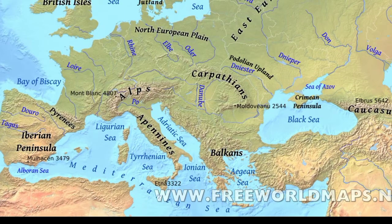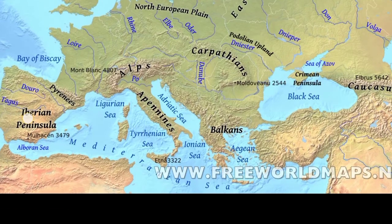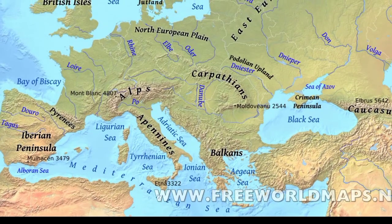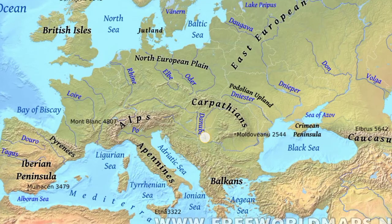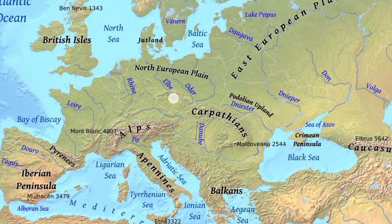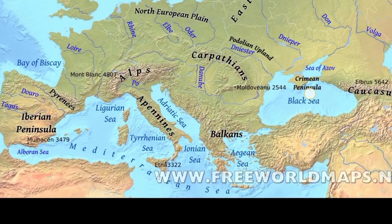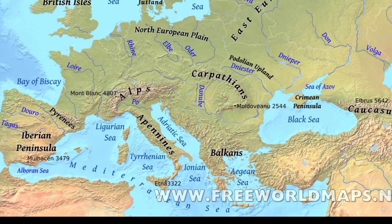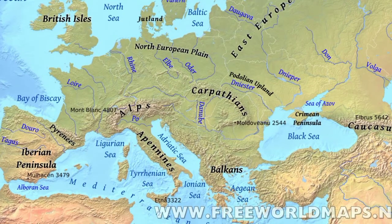This is the Pyrenees, the Iberian Peninsula, and the Bay of Biscay. This is the Danube River, the Elbe River. This is the Black Sea, and this is the Balkans — these countries are called the Balkan countries.